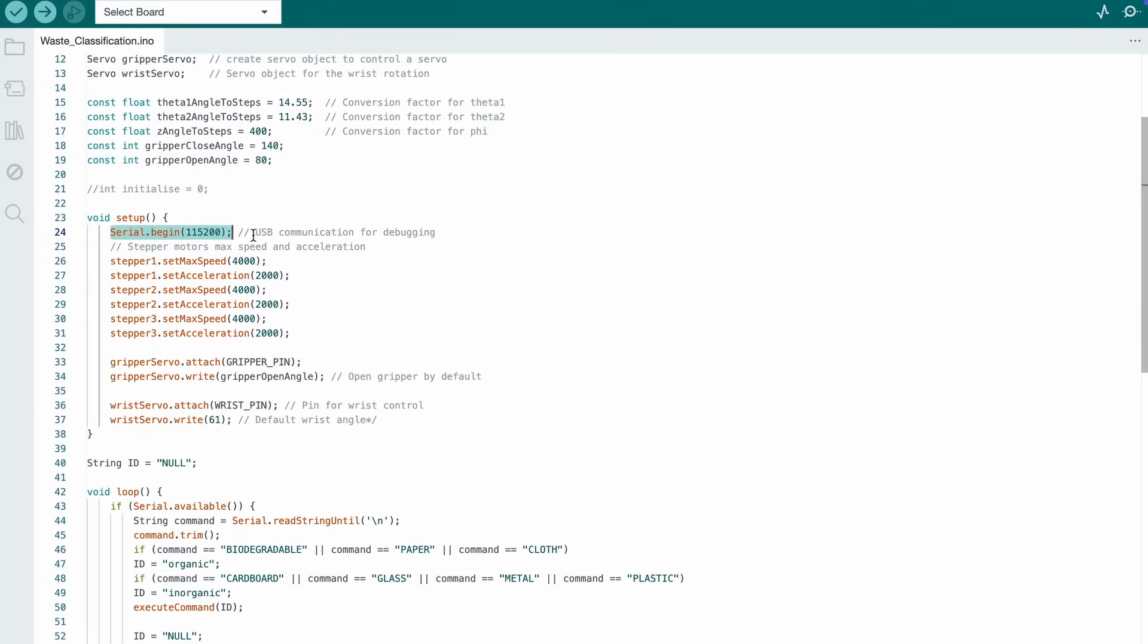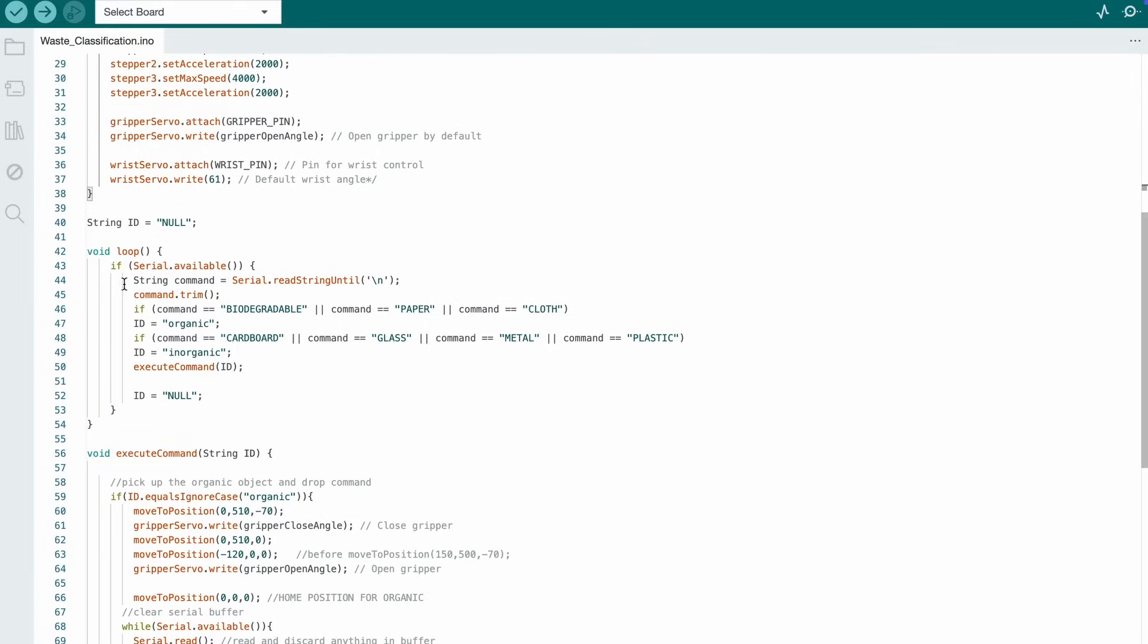After that, in the setup function, we have initialized the CDC serial port for communication. In the loop function, the ESP32 SOC will continuously check for the message from the Raspberry Pi.